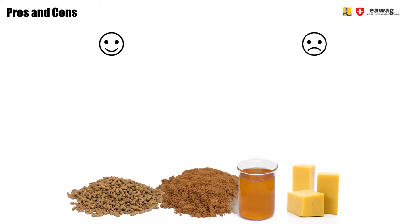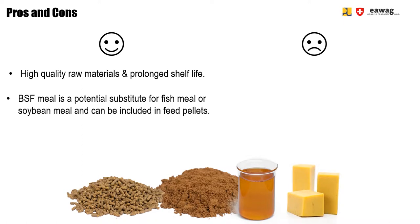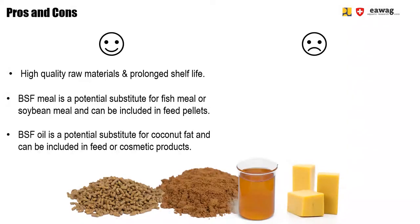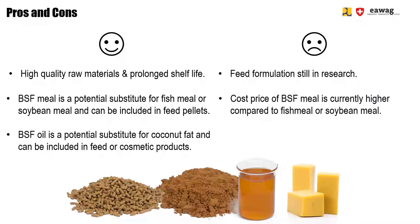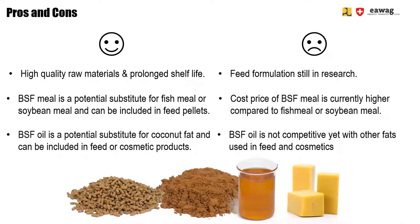Here are some pros and cons on producing BSF Meal and BSF Oil to help you decide if this process makes sense for your BSF site. BSF Meal and BSF Oil are high-quality raw materials; BSF Meal has a prolonged shelf life compared to dried larvae. BSF Meal is a potential substitute for fish meal and soybean meal for feed pellets, and BSF Oil is a potential substitute for coconut fat in feed or cosmetic products. Downsides include that feed formulation is still in research, the cost price of BSF Meal is currently higher than fish meal and soybean meal, and BSF Oil is not yet competitive with other fats in the feed and cosmetic industry.